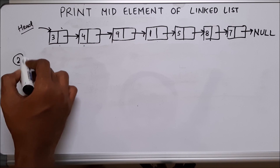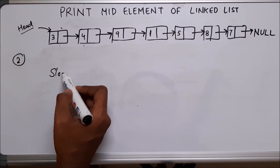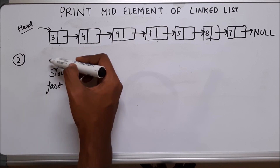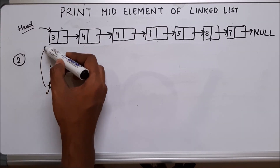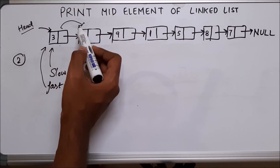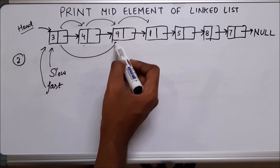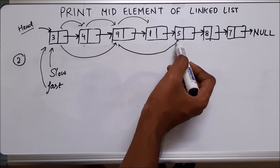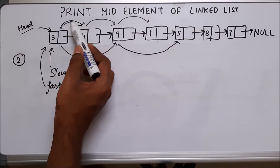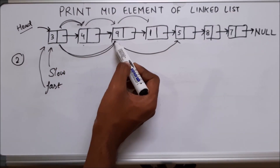Let's now discuss the second approach, which is quite interesting. I'll be having two pointers — slow and fast — both pointing to the first node. Slow will move one node at a time while fast will move two nodes at a time. When slow moves by one node, fast will reach two nodes.